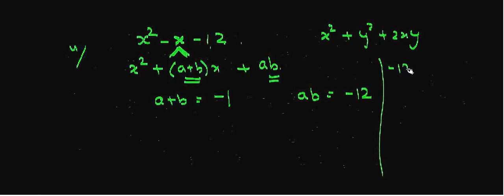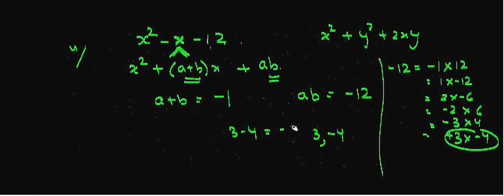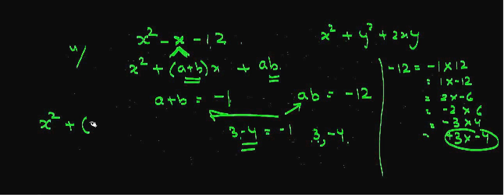We find the factors of -12. Minus 12 can be written as (-1)(12), (1)(-12), (2)(-6), (-2)(6), or (3)(-4). We observe that for the pair 3 and -4, the sum is -1 and the product is -12. These two numbers satisfy both conditions. So we will write -x as (3 - 4)x and -12 as 3 × (-4).